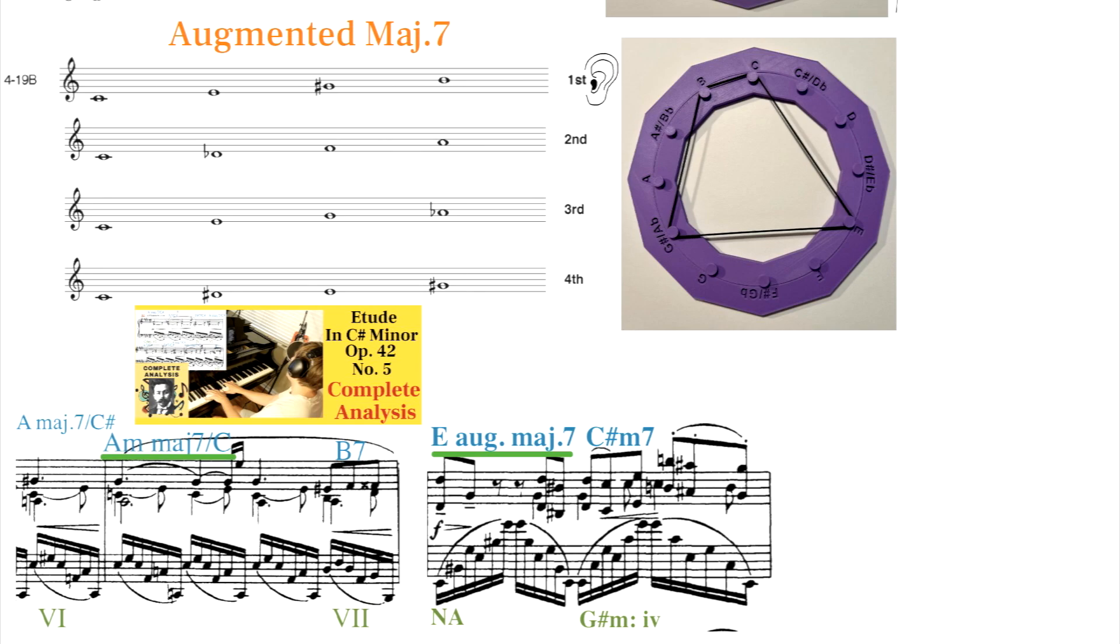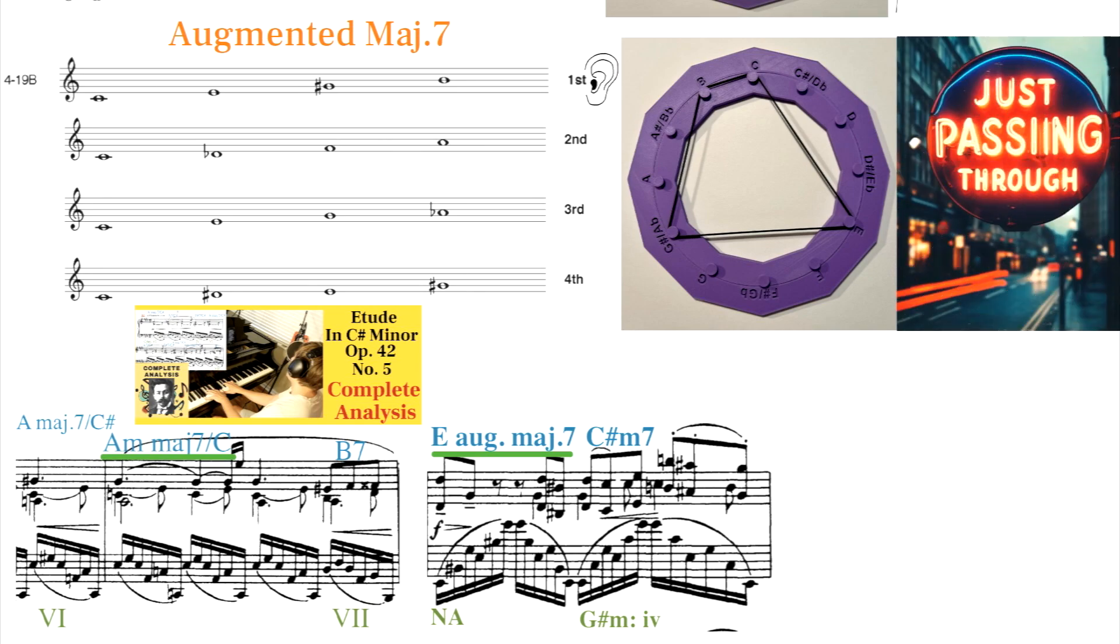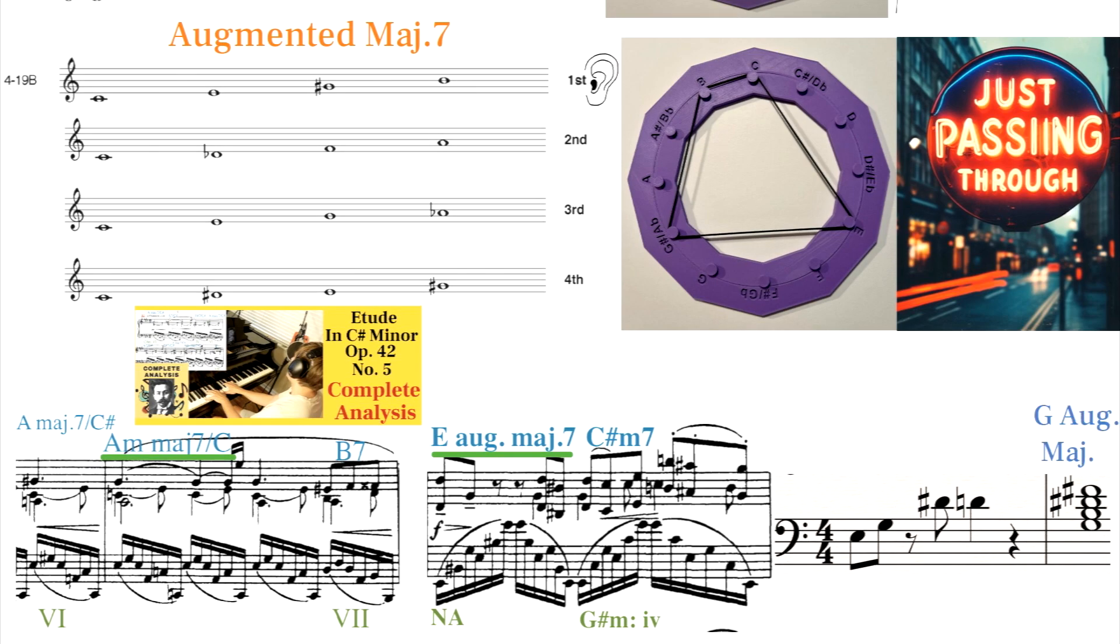While Scriabin uses 419 similarly to how an augmented chord would be used in passing, it can also be used as a stable consonant chord like the last chord of the James Bond theme song.